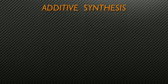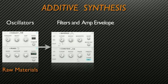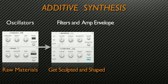Usually when we think of additive synthesis, we think of oscillators creating raw waveforms in some way or another. Our raw materials — they're rough, they're buzzy. We then have to filter them and envelope them, sculpt them, to take out the frequencies we don't want and emphasize the ones that we do.